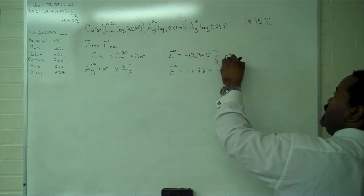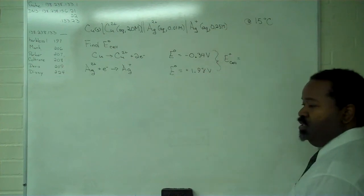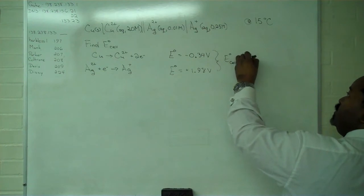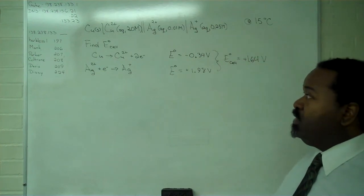So the E-cell standard, then, is the sum of these two values. And so E-cell standard is positive 1.64 volts. That's step one.